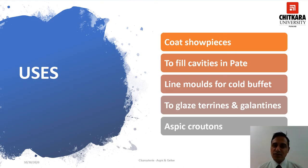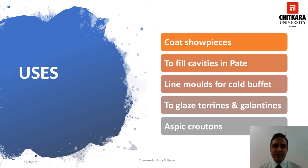In this slide, we are going to discuss about the uses of aspic. It can be used for various purposes. Some of the uses are: it can be used for coating show pieces such as whole turkeys and hams; for aspic sheets, aspic mirror and aspic cutouts; it can be used for decorative centerpieces; it can be used to fill cavities and patties; and to line molds.